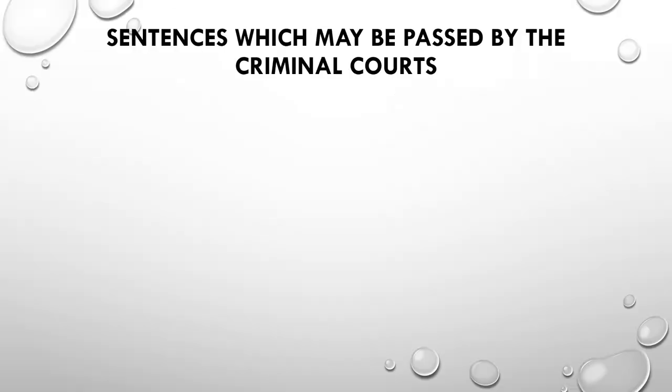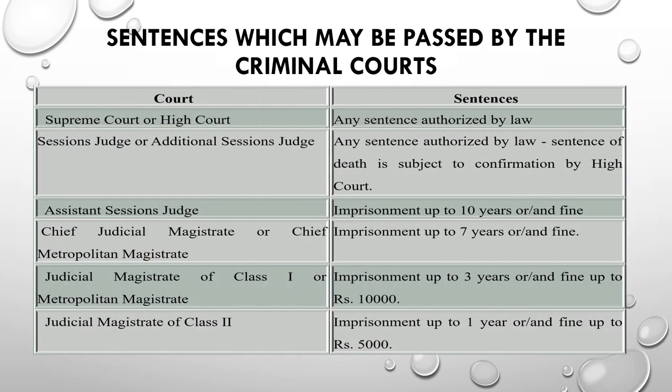Let's discuss briefly the sentences which may be passed by the criminal courts. First, the Supreme Court and High Court may pass any sentence authorized by law. Second, a Session Judge or Additional Session Judge may pass any sentence authorized by law, but a sentence of death is subject to confirmation by the High Court. Third, an Assistant Session Judge may pass imprisonment up to 10 years and/or fine. Fourth, the Chief Judicial Magistrate or Chief Metropolitan Magistrate may pass imprisonment up to 7 years and/or fine. Fifth, a Judicial Magistrate of First Class or Metropolitan Magistrate may pass imprisonment up to 3 years and/or fine up to 10,000 rupees. Last, a Judicial Magistrate of Class 2 may pass imprisonment up to 1 year and/or fine up to 5,000 rupees.